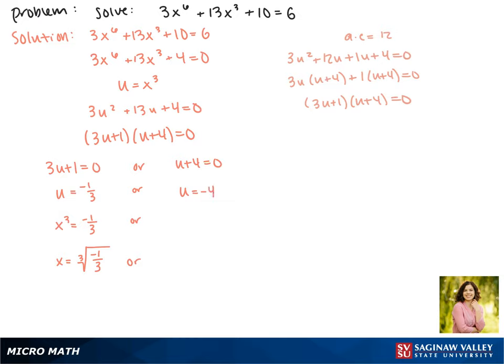Now solving for u gives us u equals negative 4, and substituting x back in, we get x cubed equals negative 4. Again, we'll take the cube root of both sides, and the cube root of negative 4 is our other solution.